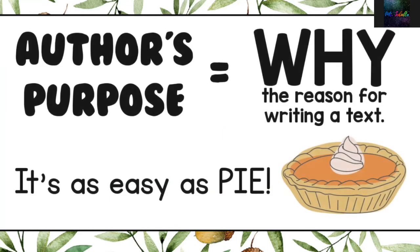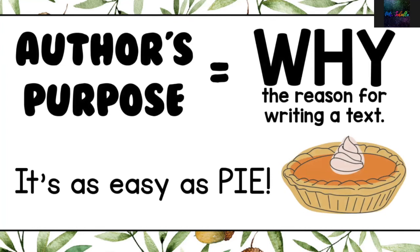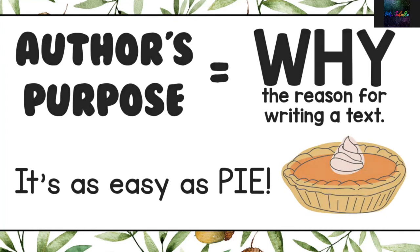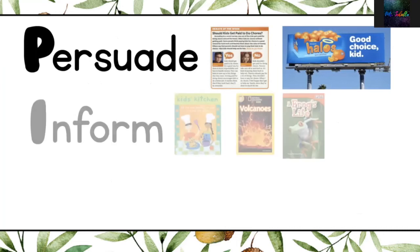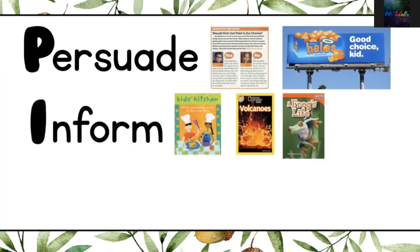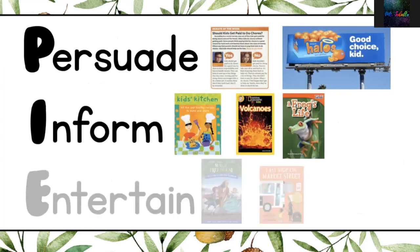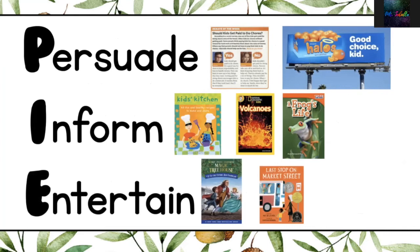Let's review. The author's purpose is the reason for writing or creating a text. The purpose can be to persuade — to get the reader to do or believe something. It can be to inform and teach about a topic. Or the purpose can be to entertain the reader with a story. If you forget, just think about PIE: P for persuade, I for inform, E for entertain.